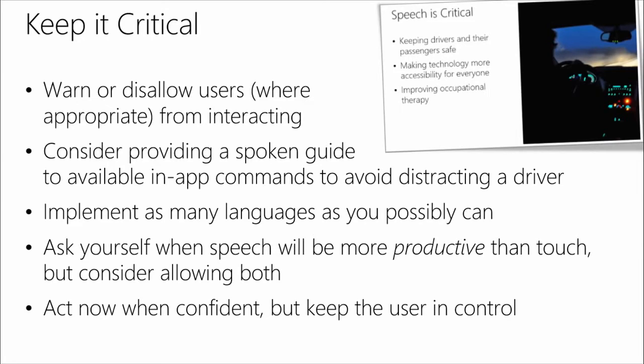If you know that the user shouldn't be interacting with your app, feel free to give them a warning that says 'it looks like you're driving' — can you validate that you're the passenger? You don't want to completely turn off that scenario. In my car, my GPS system completely disallows me from entering info if the car is moving, whereas in my wife's car she can actually enter everything. Sometimes my car is our family car, so on a road trip she's sitting right next to me and can enter stuff in the GPS.